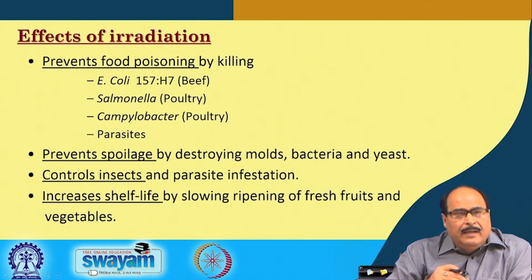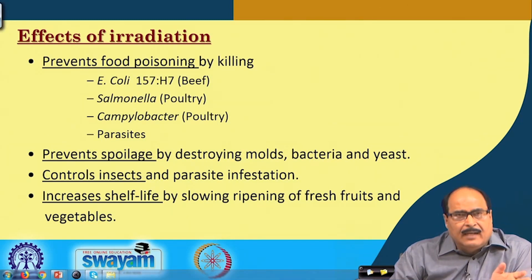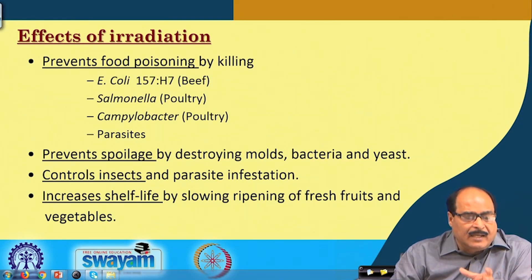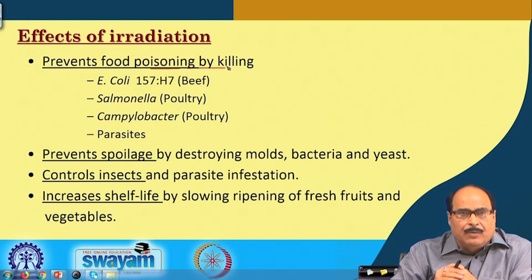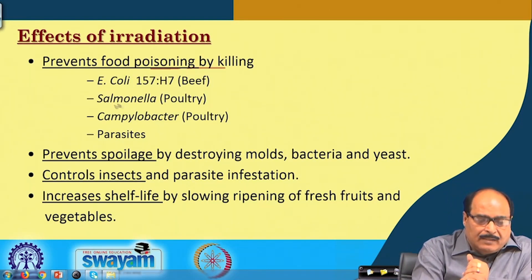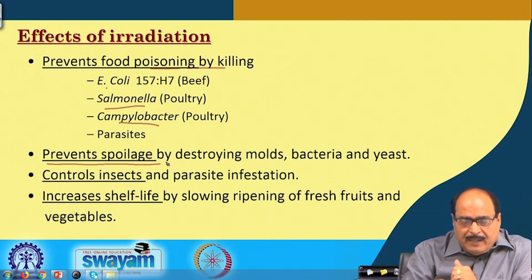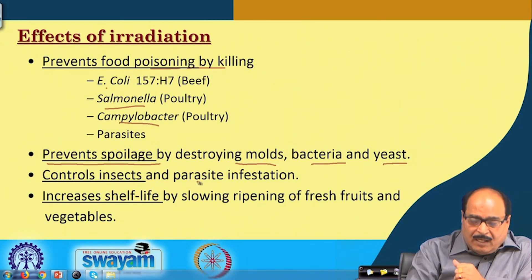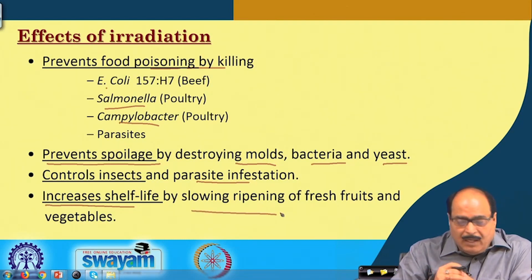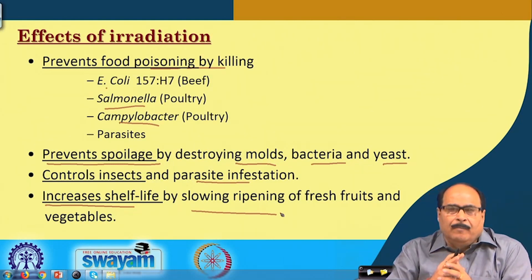Ionizing radiation or irradiation of food can prevent food poisoning by killing pathogenic or toxin-producing microorganisms like E. coli, Salmonella, Campylobacter, and parasites. It can prevent spoilage of food materials by destroying molds, bacteria, and yeast. It controls insect and parasite infestation and increases shelf life by slowing down the ripening of fresh fruits and vegetables. So it has several beneficial effects, which we will take up again in detail in the second part of the lecture.